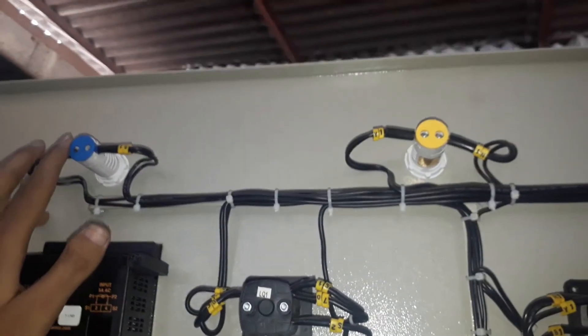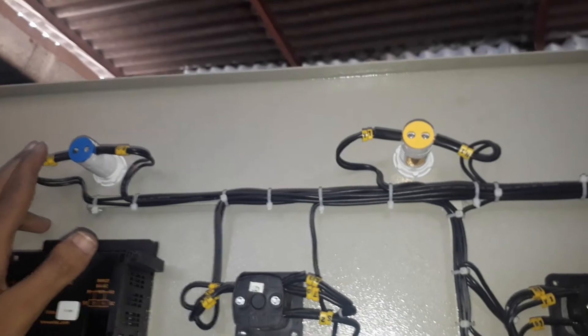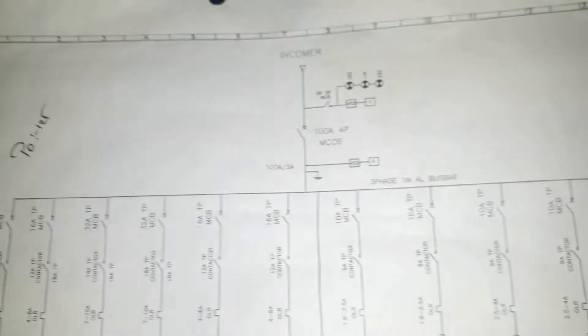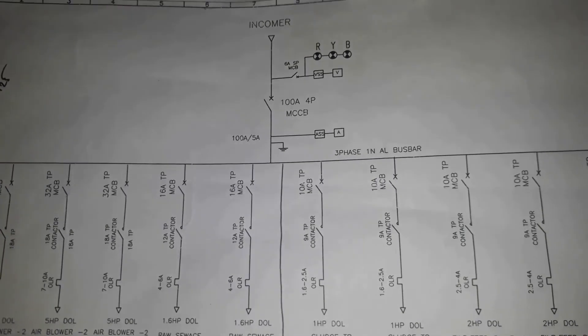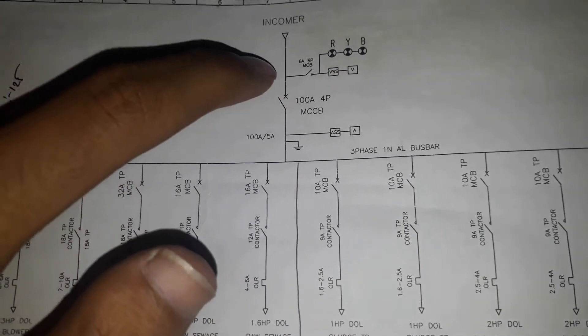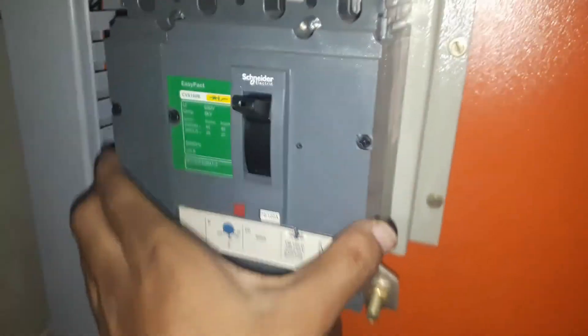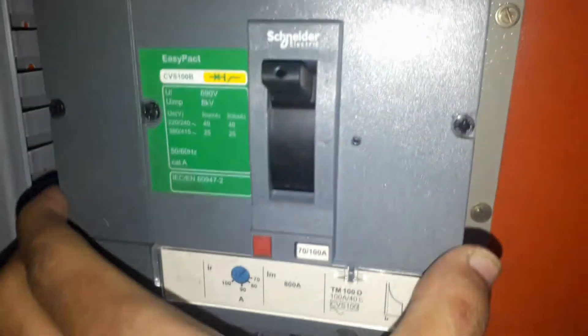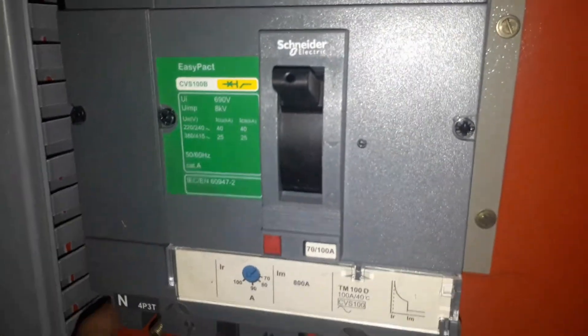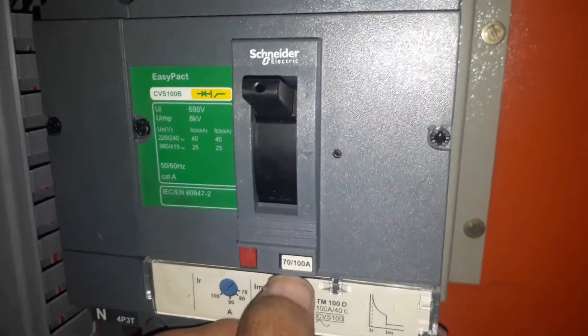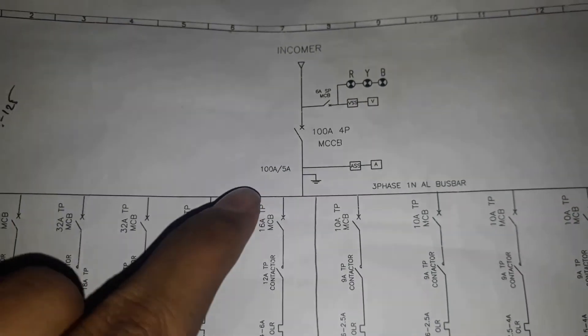After the voltmeter selector switch and indicators, we are using a 100-ampere four-core MCCB. This is the main MCCB of this panel — it is a Schneider MCCB, and the 100-ampere rating is written on it, as you can see here.